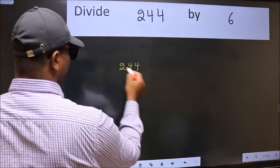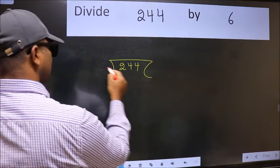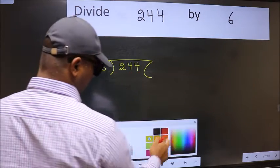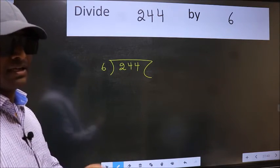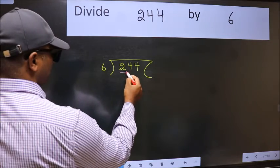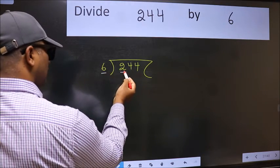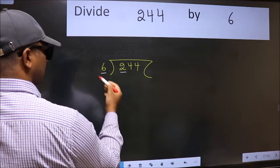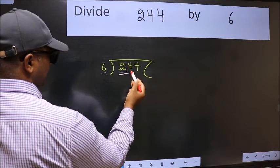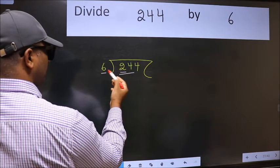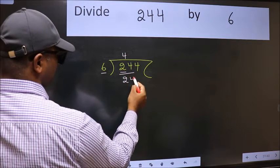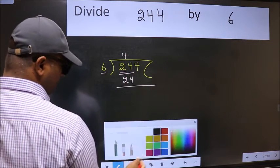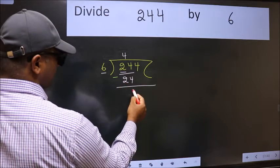244 and 6 here. This is your step 1. Here we have 2 and here 6. 2 is smaller than 6, so take 2 numbers: 24. When do we get 24 in 6 table? 6 times 4 is 24. Now we should subtract. We get 0.